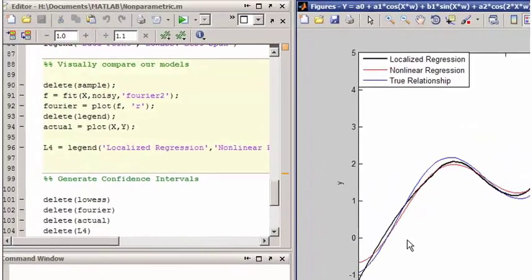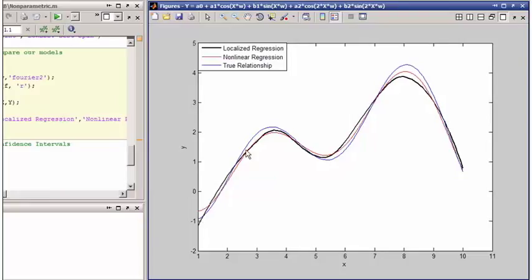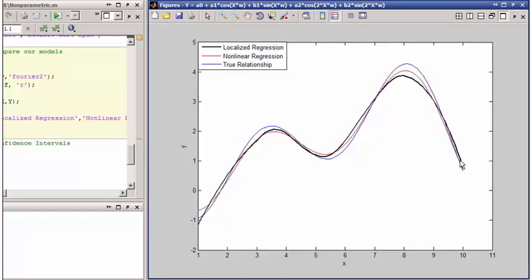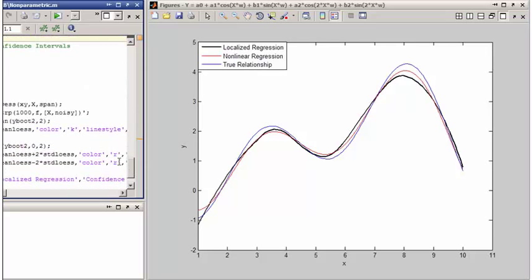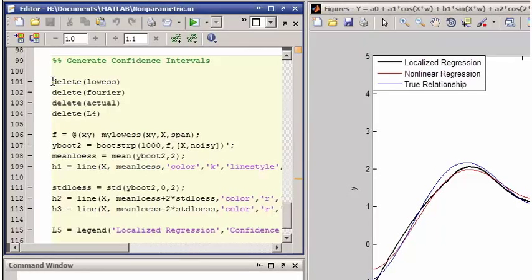This next plot allows you to visually compare the relative accuracy of the two models in estimating the true relationship between x and y. As you can see, the nonparametric fit is almost as accurate as the nonlinear regression model. Equally important, the nonparametric fit can be estimated without the need to specify the right parametric model for the regression analysis.